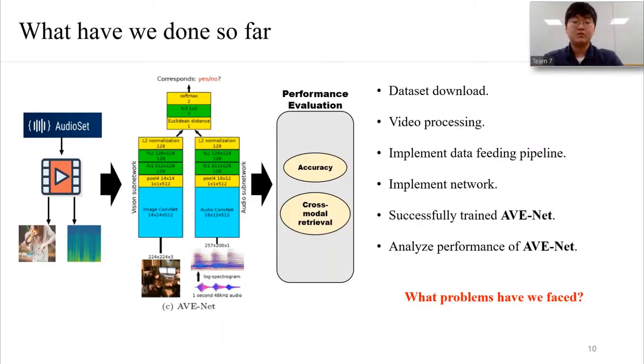Next, these are the things that we have done so far. We first downloaded the subset of AudioSet, which is 90,000 videos. Then we preprocessed videos into images and spectrograms and implemented pipelines to feed them into the network. We finally implemented and trained AVENet and analyzed its qualitative performance.